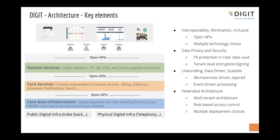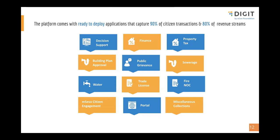All of these are built in microservices architecture, and a lot of our design principles are based on ensuring the platform is scalable and extendable. The majority of the work our partners do involves five or six applications we offer as part of the platform, which look at around 70% of ULB revenue and citizen engagement. Other applications are directly built by partners on top of the existing platform, making the platform more scalable. The full-stack applications available as part of Digit include DSS, Finance, Property Tax, Building Plan Approval, Public Experience, Sewerage, Water, Trade License, and NOCs — all with front-end, core services, and business services as part of the open-source stack.